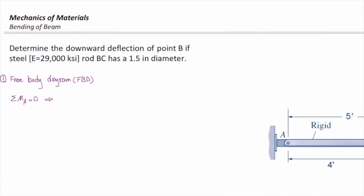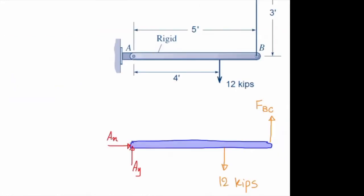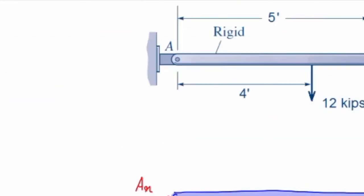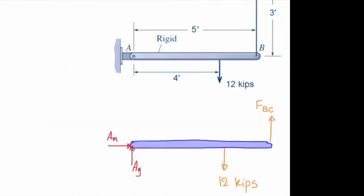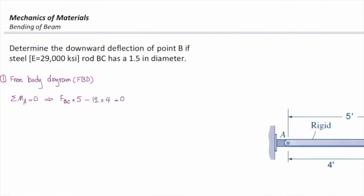So sum of the moments about A is zero. So, 12 kips has an arm of 4 feet, and unknown force FBC has an arm of 5 feet. And they are acting opposite to each other. So the equilibrium equation gives me FBC times 5. I assume that the counterclockwise is positive.